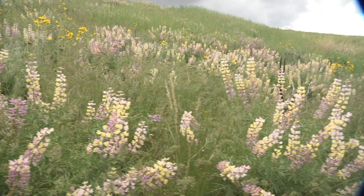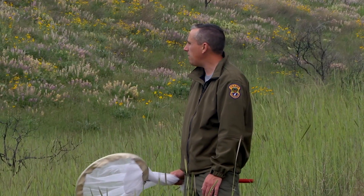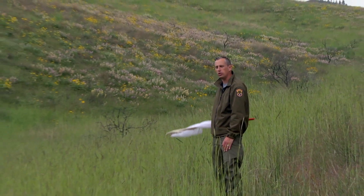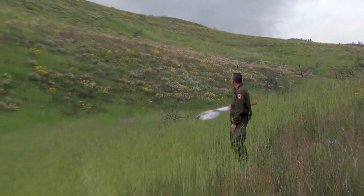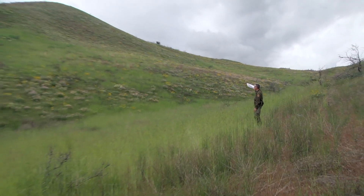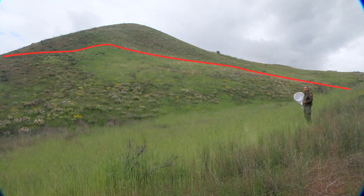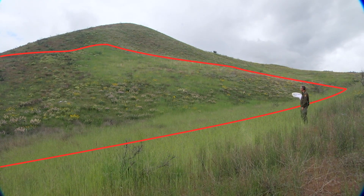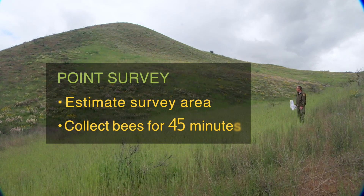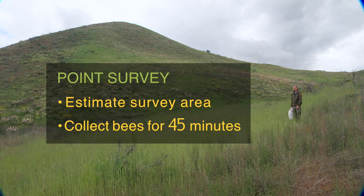Once you've determined that a site is suitable to conduct bumblebee surveys, you're going to estimate about 150 yards by 150 yards — that will be your survey area. That would be about to the top edge of this hill where the flowers end, to the edge of the hill to the left, and then about where I'm standing. You estimate your survey area and then spend 45 minutes collecting as many bumblebees as you possibly can within it.